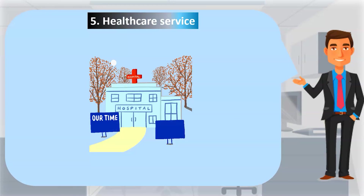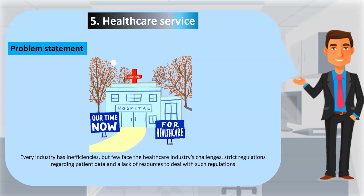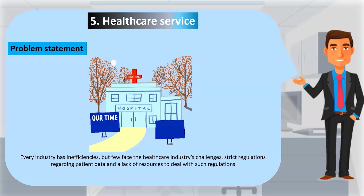The fifth example is Healthcare Service. Healthcare systems contain numerous burdensome tasks that involve significant resource allocation, such as claim management, resulting in high operational costs and slow processes. Every industry has inefficiencies, but few face the healthcare industry's challenges: strict regulations regarding patient data and lack of resources to deal with such rules. Billing takes time after a healthcare service is provided due to manual and repetitive tasks in the management process, including document and data input processing and evaluation.